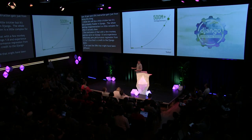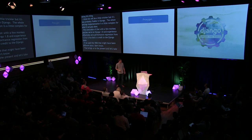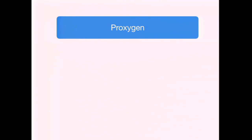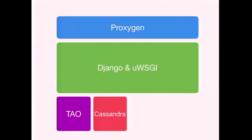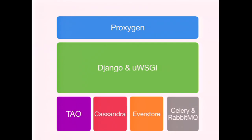Let's take a quick look at what the Instagram stack looks like today. A request first hits Proxygen — a Facebook-developed open-source HTTP load balancer and proxy server — going through several layers: edge routing, data center, then cluster. Eventually it hits a Django running under uWSGI. Django talks to a number of backend services: TAO is the primary data store; Cassandra stores counters and scene state; Everstore is a Facebook large blob store for all actual media; and we also put tasks into RabbitMQ for Celery for delayed execution.